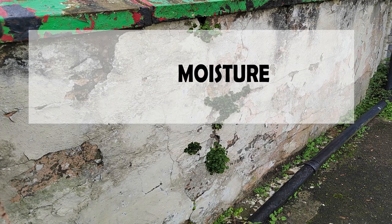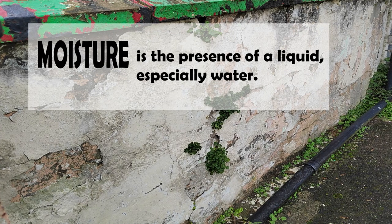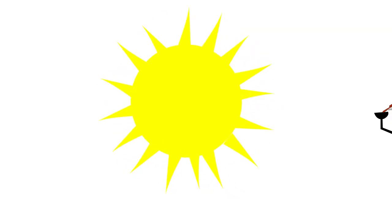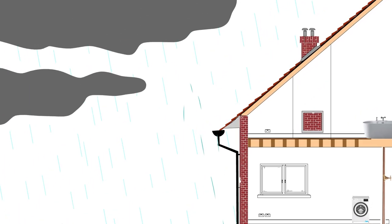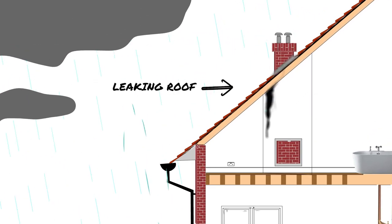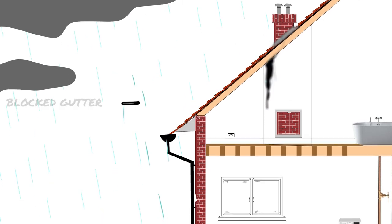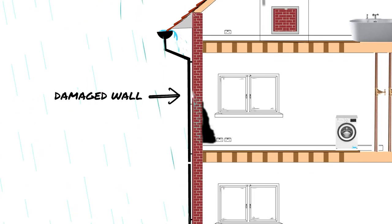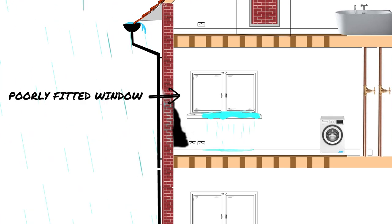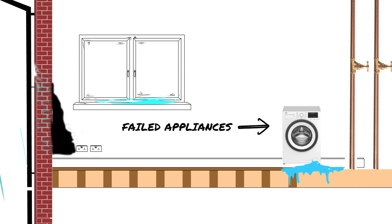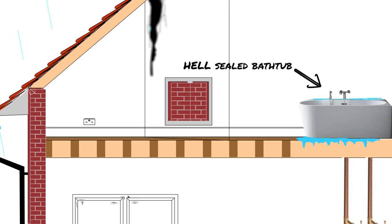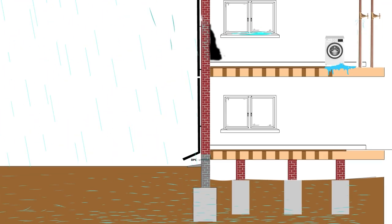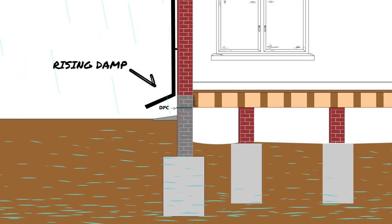Damp and mold are caused by excess moisture. Damp refers to the presence of excess moisture in a room or building. There are several ways moisture can get into a building: rain can get in through a leaking roof, damaged flashing, cracked chimneys, blocked or damaged gutters, cracked exterior walls, or missing pointing between bricks. Also, poorly fitting doors and windows, leaking appliances, leaks from interior pipes, and poorly sealed baths and showers. Moisture can also enter through the soil — groundwater can rise up into walls and floors if the damp-proof course is damaged or missing.